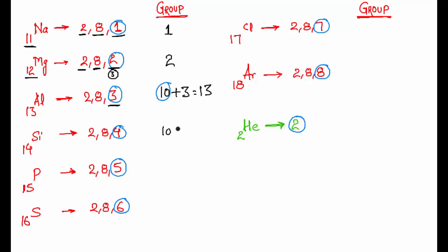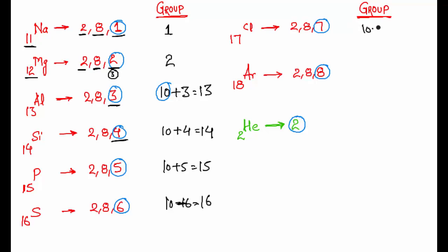Silicon has valence electrons greater than 2, so group number is 10 plus 4, that is 14. Similarly, 10 plus 5 is 15, 10 plus 6 is 16, 10 plus 7 is 17, and 10 plus 8 is group 18.